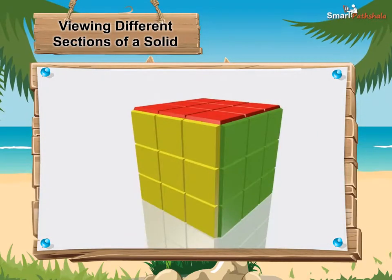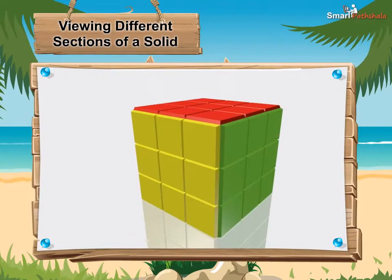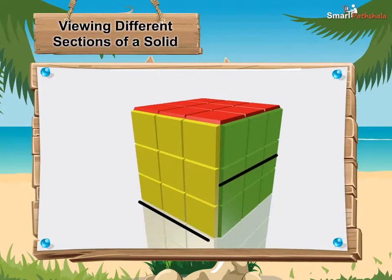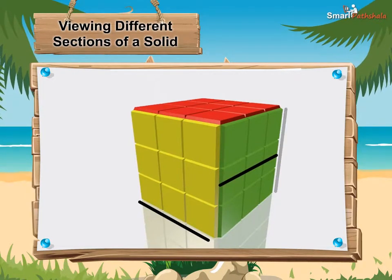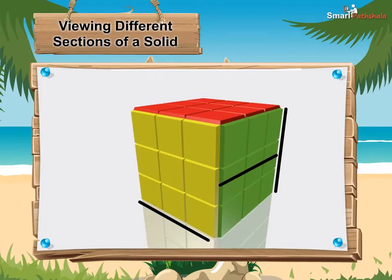Three dimensional objects are solids having length, breadth and height and look different from different points of view.